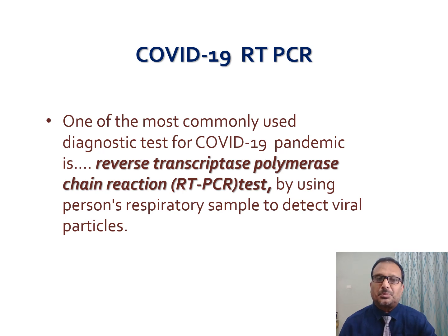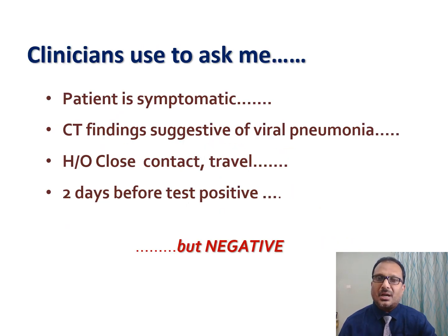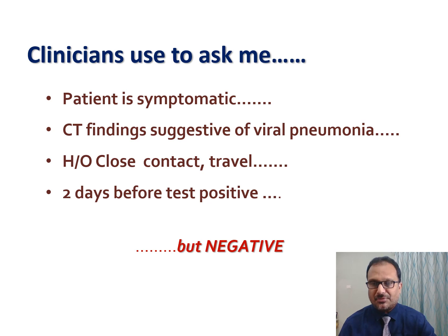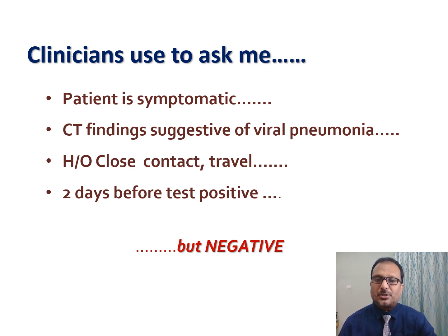RT-PCR uses a person's respiratory sample to detect viral particles. Clinicians usually ask me: the patient is symptomatic but the test is negative; CT findings suggest viral pneumonia but the test is negative; history of close contact and travel history is there for the individual but the test is negative; and most importantly, two days before the test was positive but now it's negative. Why are all these false negatives happening in spite of symptoms, CT findings, history of close contact and travel, and a previously positive test?